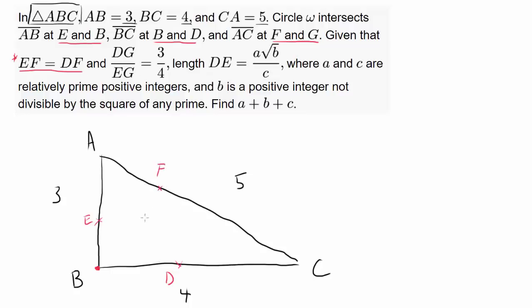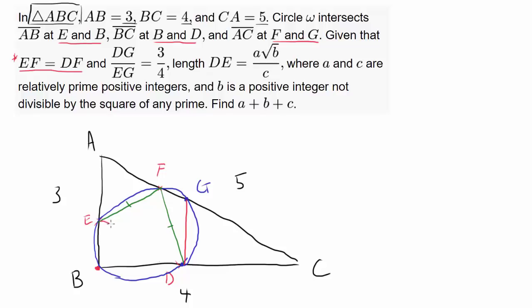Let's put F about here and try to draw the circle. So the circle goes something like this, and we have G right here. We know EF is equal to DF, so let's draw EF and DF — we know these two are equal to each other.